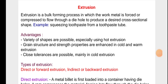Now we will see the part extrusion. Extrusion is a bulk forming process in which the work metal is forced or compressed to flow through a die hole to produce a desired cross-sectional shape. A common example is squeezing toothpaste from a toothpaste tube. Advantages: a variety of shapes are possible, especially using hot extrusion. Grain structure and strength properties are enhanced in cold and warm extrusion. Close tolerances are possible, mainly in cold extrusion.